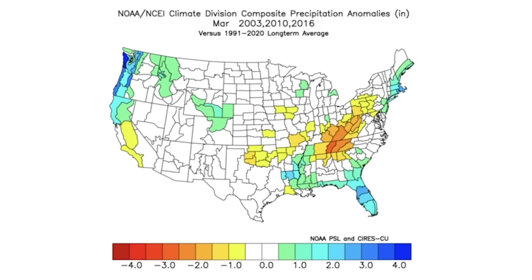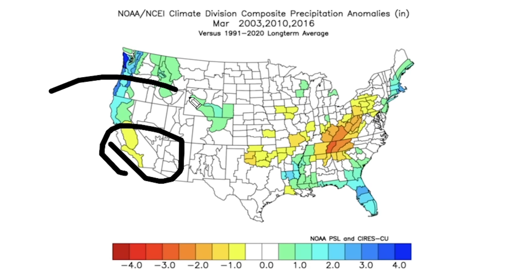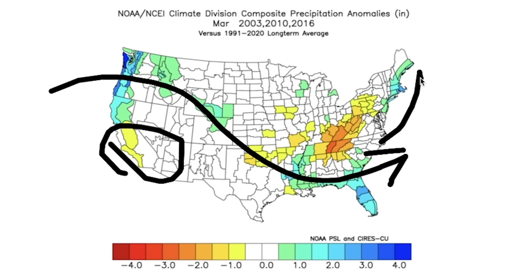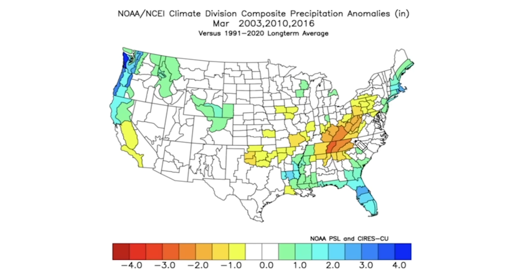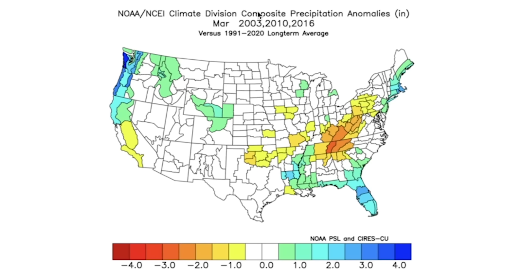For March, we saw some dryness over the southwest and more storms moving through like this — some even up the coast creating above-average precipitation for New England. However, not much precipitation fell in the more inland areas: the Ohio Valley, the Midwest, and interior eastern states like Pennsylvania, Virginia, West Virginia, western North Carolina, Tennessee, and Kentucky.